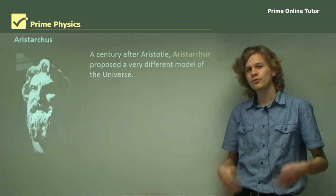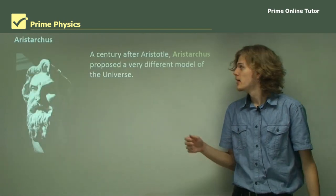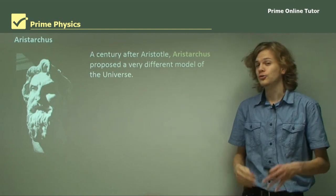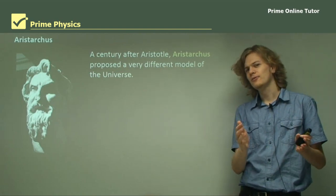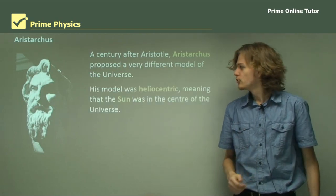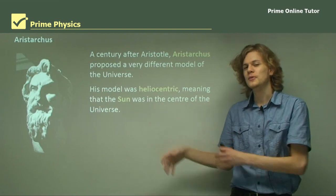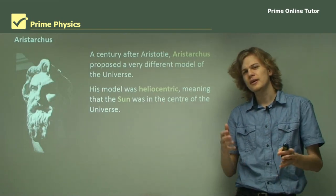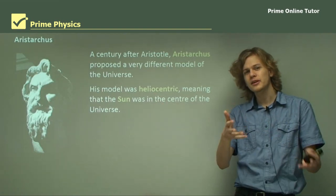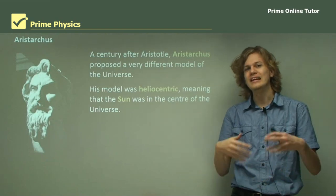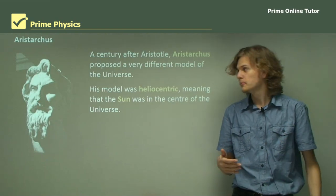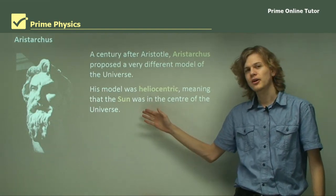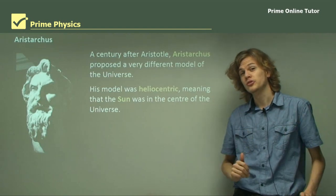We'll start off with Aristarchus, who was a Greek philosopher. A century after Aristotle, Aristarchus proposed a very different view of the universe. His model was heliocentric, which meant that it was centered on the sun. This made slightly better predictions than Aristotle's model because it didn't need epicycles. In this model, the sun was in the center of the entire universe.